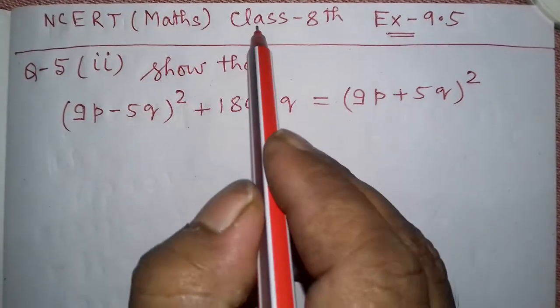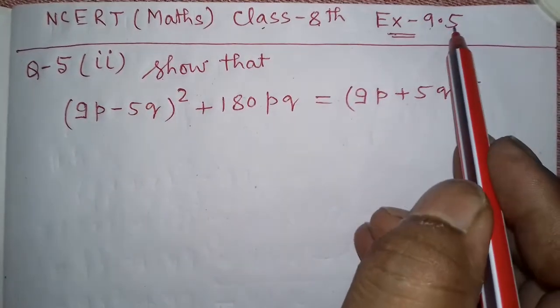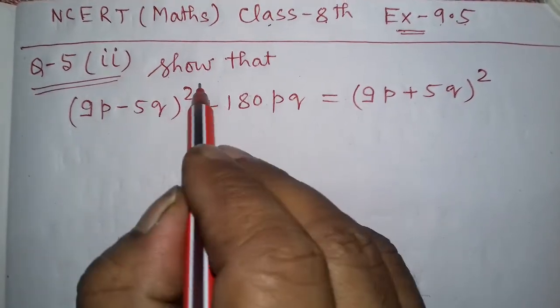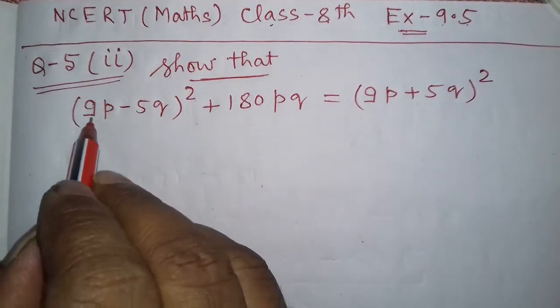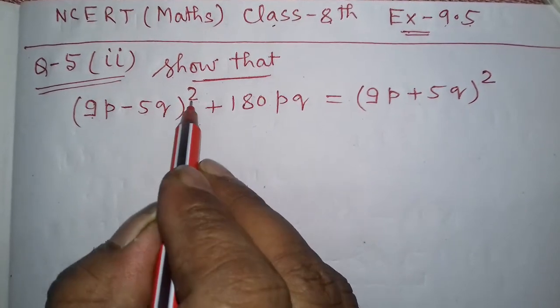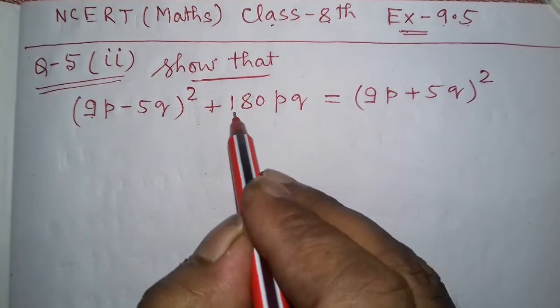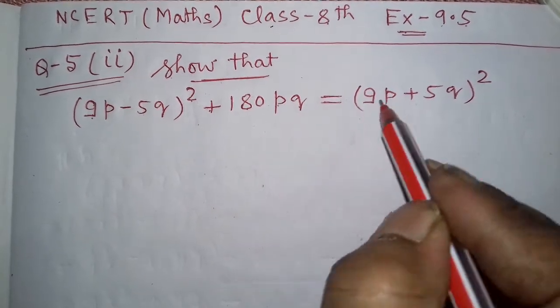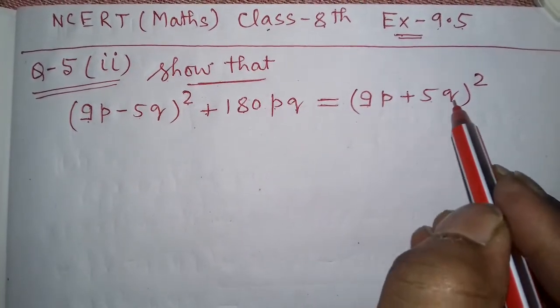NCERT Maths Class 8, Exercise 9.5, Question Number 5, Part 2 says: Show that (9p - 5q)² + 180pq = (9p + 5q)².